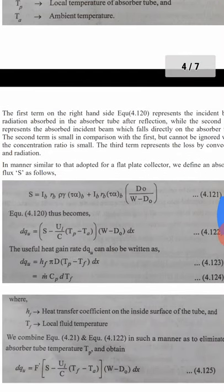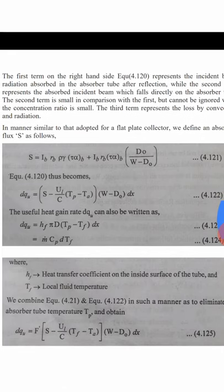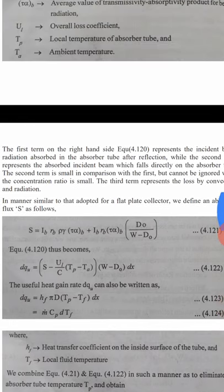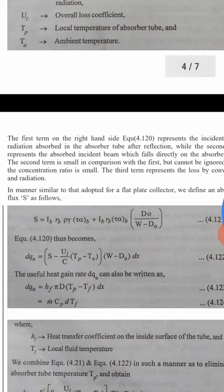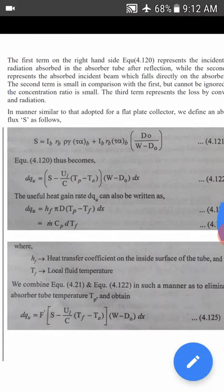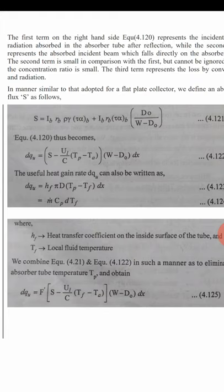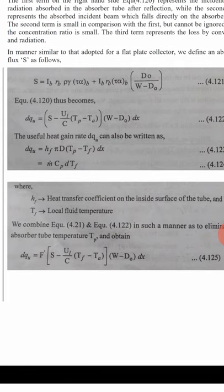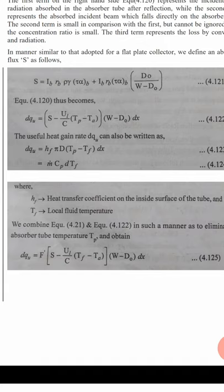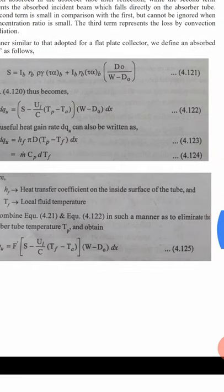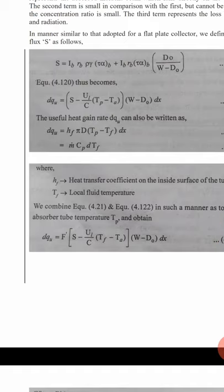From the useful heat gain expression, we define the absorbed flux S. By substituting expression 4.121 into expression 4.120, d_qu becomes expressed in terms of the absorbed flux S. The useful heat gain can also be expressed as h_f times pi times d_i times (T_p minus T_f) times dx, where m-dot is the mass flow rate, h_f is the heat transfer coefficient on the inside surface of the absorber tube, and T_f is the local fluid temperature. Combining equations 4.121 and 4.122 gives the final expression involving the collector efficiency factor F'.